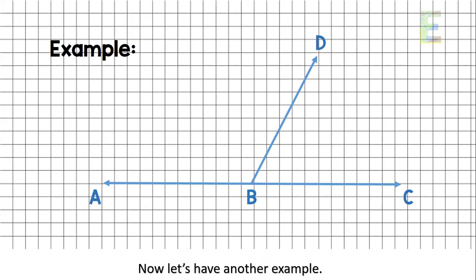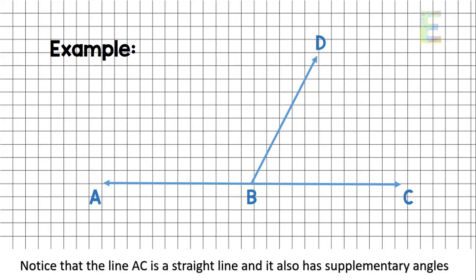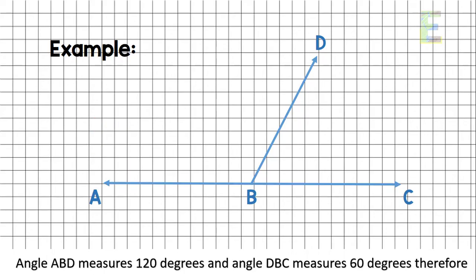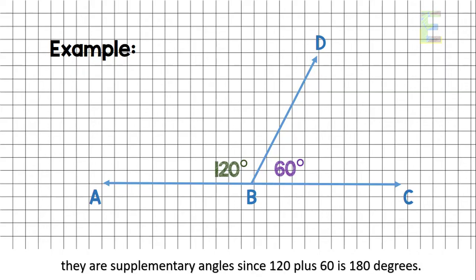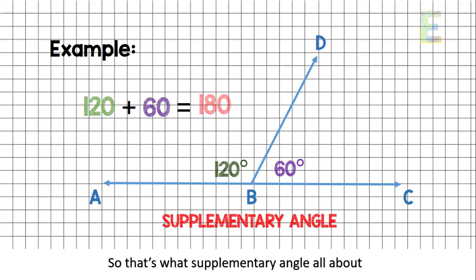Now let's have another example. Notice that the line AC is a straight line and it also has supplementary angles. Angle ABD measures 120 degrees and angle DBC measures 60 degrees. Therefore, they are supplementary angles since 120 plus 60 is 180 degrees.